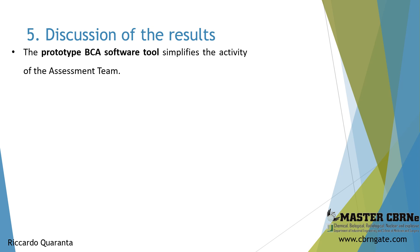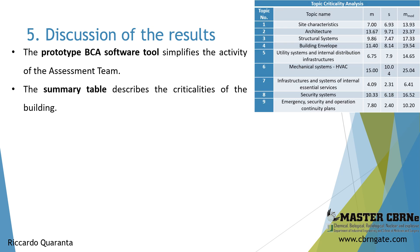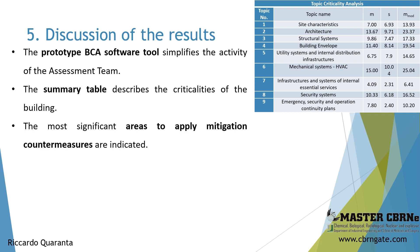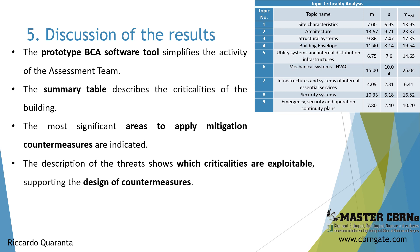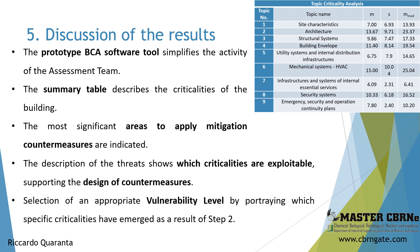The case study shows some interesting properties of the proposed method. The adoption of the prototype BCA software tool greatly simplifies the activity of the assessment team, and the summary table provides in a single screen an effective description of the general criticalities of the building and a direct indication of the most significant areas where countermeasures for mitigation should be applied. The detailed description of threats in step two highlights which criticalities are realistically exploitable, providing precise indications for the design of countermeasures. Step three allows for selection of an appropriate vulnerability level based on a clear picture of specific criticalities.